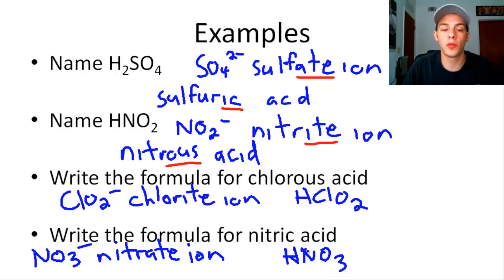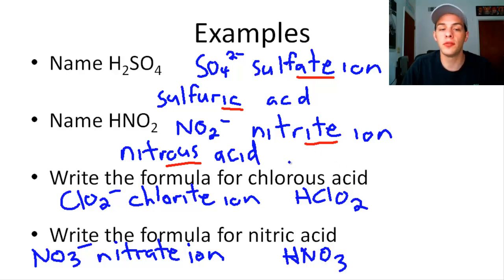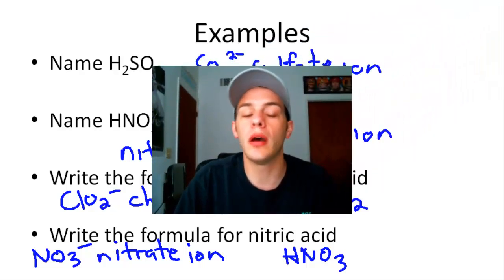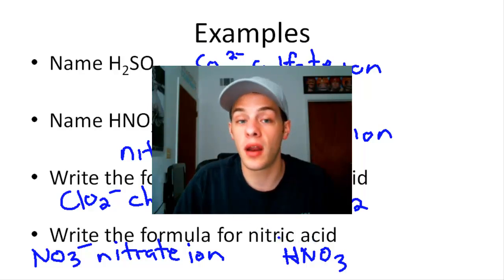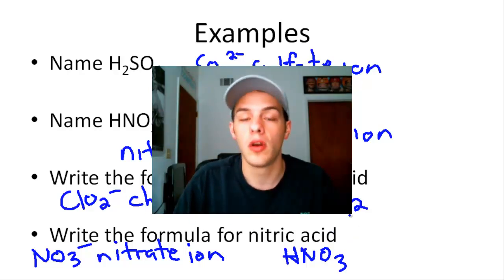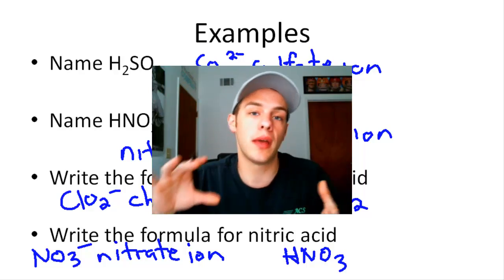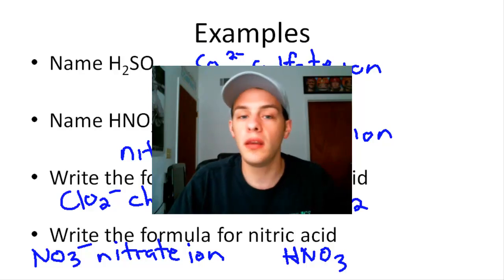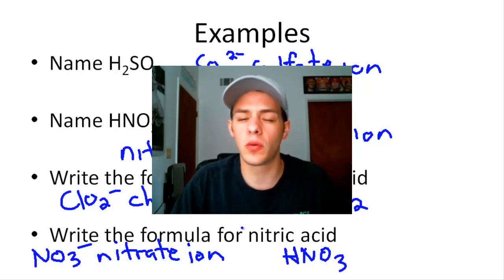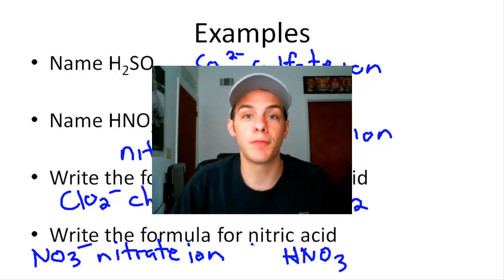You should be comfortable going back and forth between names and formulas for both acids and binary molecular compounds. Remember, you must memorize your polyatomic ions. Also, just because we name oxy acids based on oxyanions doesn't mean they're ionic compounds — ionic compounds have cations and anions held together by ionic bonds in a three-dimensional repeating lattice. These are actually molecular compounds linked by covalent bonds, even if the naming might suggest otherwise.